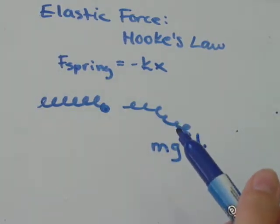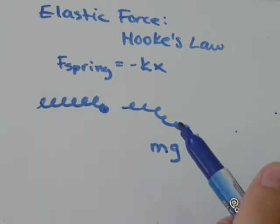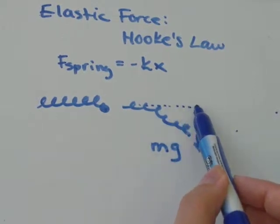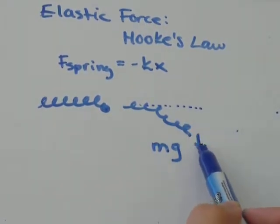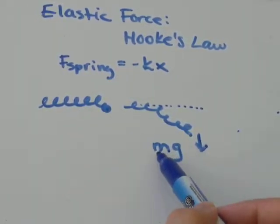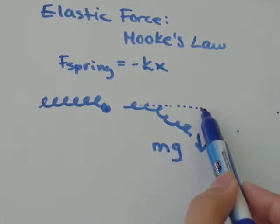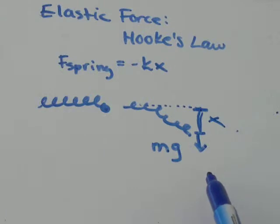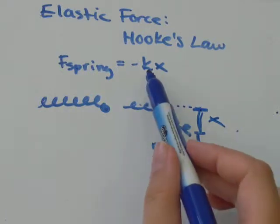So that just means how much your spring moved. If this was the spring at rest, it should be sort of like that. And when I've got a weight pulling down on it because of the mass on the end and the force of gravity, this distance here, the amount it's moved, that would be equal to x.